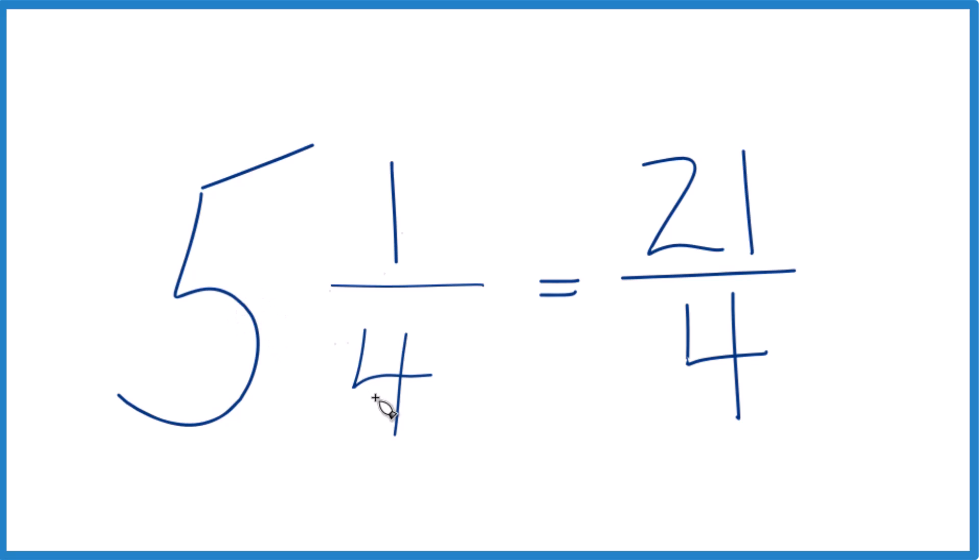Let's try it again. 5 times 4 is 20. 20 plus 1 is 21, that's our numerator. Then we just bring that 4 across, and we have our improper fraction.